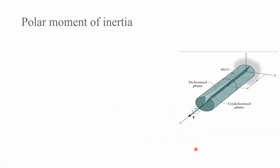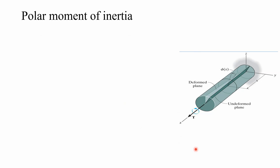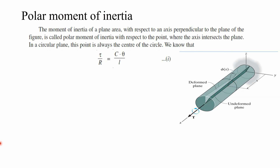Now let us discuss the polar moment of inertia. Generally the moment of inertia of a circular section is taken about the y and z cross-sectional axes. However, since torsional deformation occurs along the longitudinal axis (x-axis) of the shaft, it is important to consider the moment of inertia about that longitudinal axis, which is called the polar moment of inertia. It is the moment of inertia of a plane area with respect to an axis perpendicular to the plane — at the center of the circle.